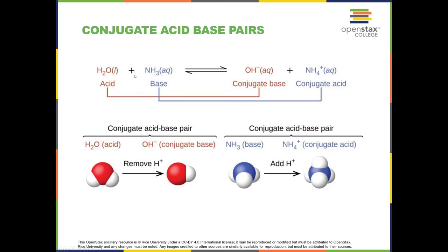Ammonia acted as a base and accepted a proton from water, forming NH₄⁺. NH₄⁺ does not want to accept another proton; instead it wants to get rid of that proton and reform NH₃ — specifically by giving that proton to OH⁻ in the reverse reaction. Things that donate protons are acids, so NH₄⁺ is the conjugate acid of NH₃. These are conjugate acid-base pairs: water and OH⁻ are one pair, and ammonia and NH₄⁺ are another.